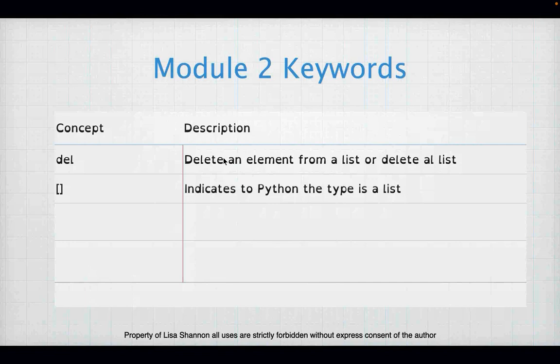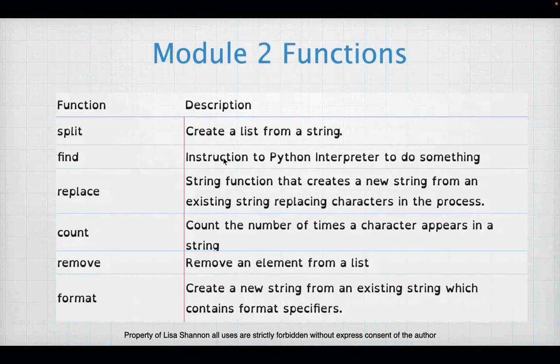We have some new keywords. We have the keyword del — D-E-L — and that is to delete an element from a list or to delete a list. We also have the open and close square brackets, and those indicate to Python that the type you are using is a list.